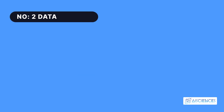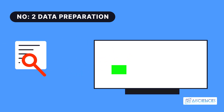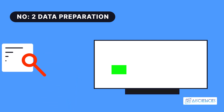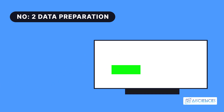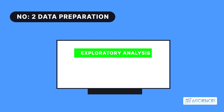Step 2: Data Preparation. The success rate of any analytical process depends on the quality of the data you use. Hence, you need to spend time deciding the quality of data, and only then can you take the steps required to fix issues such as missing data and handling outliers. Exploratory analysis is the best method to study the variations of the data in great detail, thereby improving the quality of the data.